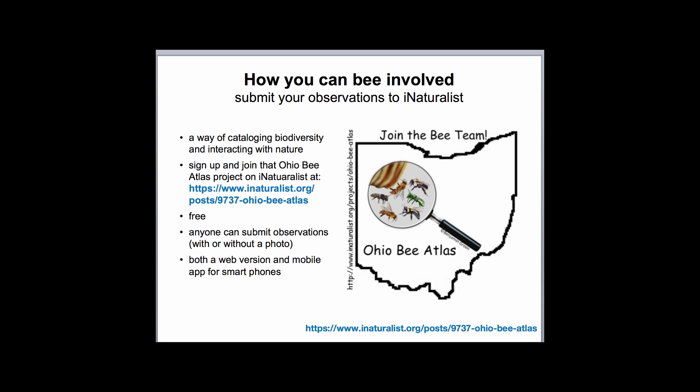Another way that people are getting involved in our research is to submit observations to the Ohio Bee Atlas, which is a project on a larger website called iNaturalist. iNaturalist is a nationwide tool for cataloging biodiversity of all kinds — you can use it to report your observations of insects, plants, birds, any living thing, or even fossils. We have a specific project on there called the Ohio Bee Atlas. You can join for free and submit observations with or without a photo, and there's also a web version and a mobile app for smartphones.